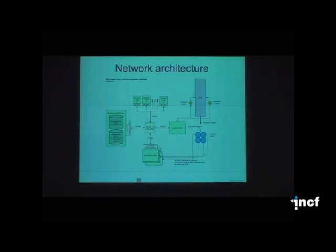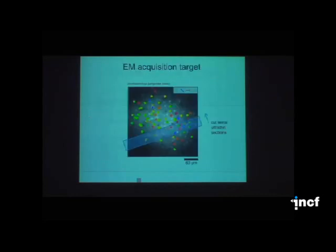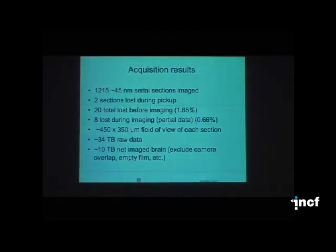The system can acquire from pia to white matter in about two hours. We cut this series and we did okay. We lost two sections during pickup, 20 during imaging. We'll get a 450 by 350 field of view, about 34 terabytes of raw data and 10 terabytes of net real 8-bit voxels that comprise the actual data set. One of the sections in the data set looks like this: 115,000 pixels by 80,000 pixels of actual brain.